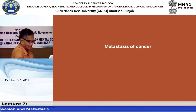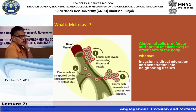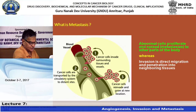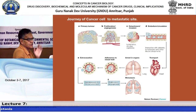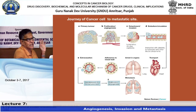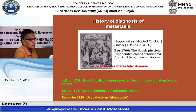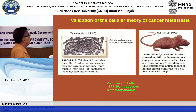Moving to metastasis: the difference between invasion and metastasis is simple - metastasis goes to distant organs while invasion goes to neighboring tissue. Cancer cells travel via blood or the lymphatic system to distant organs where metastasis occurs. The term metastasis was used as early as 1829.